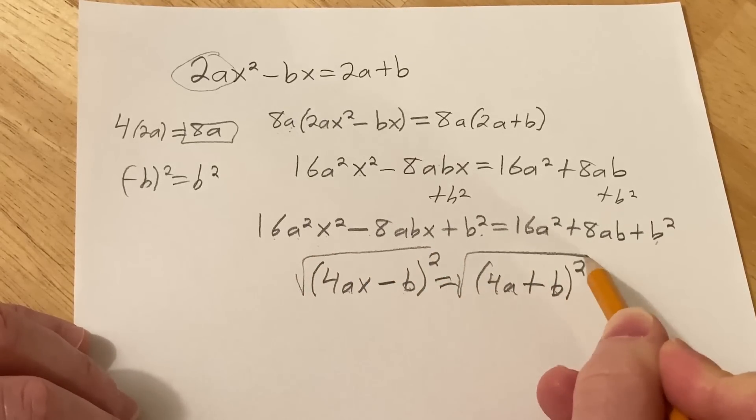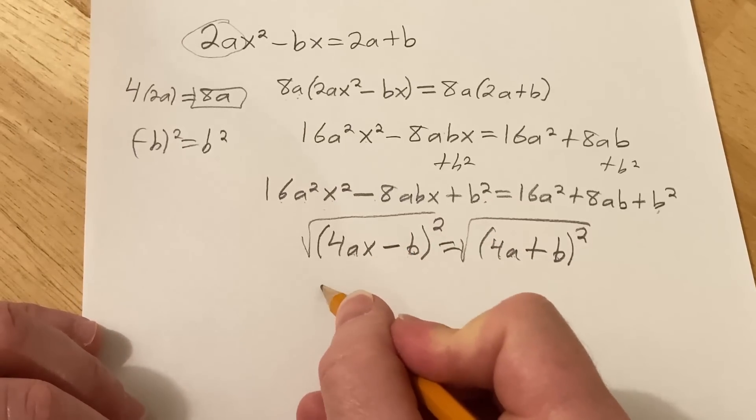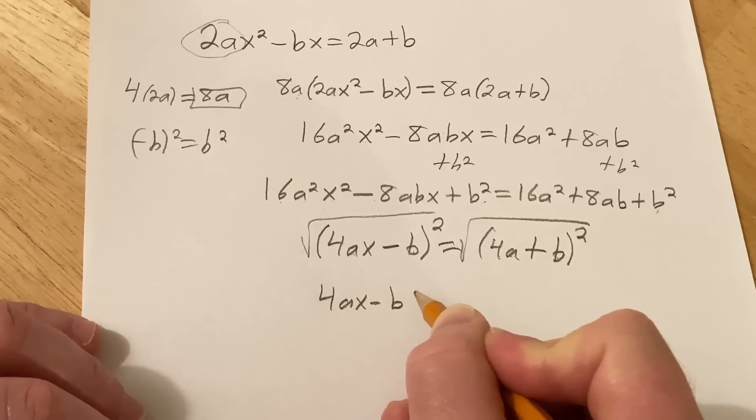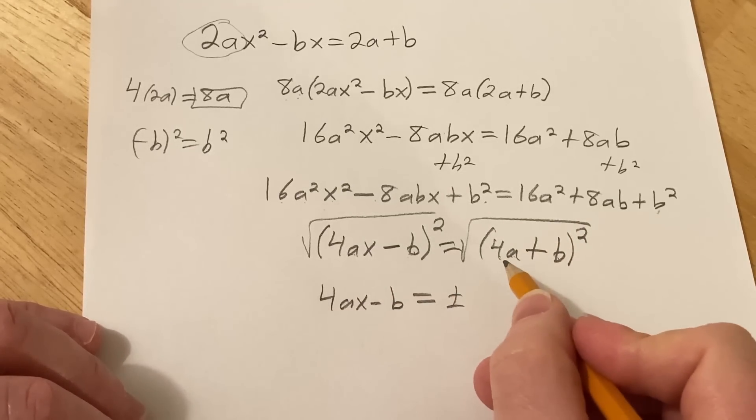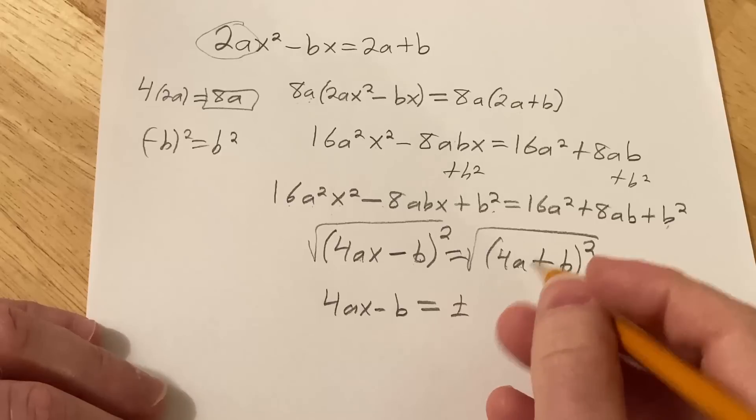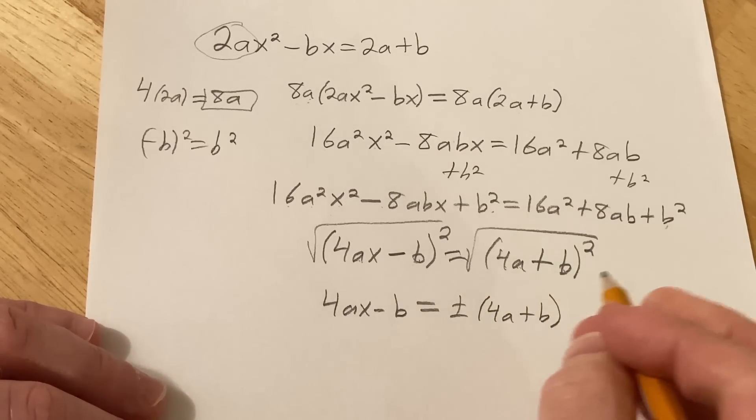Take the square root. I'm feeling much better about this problem now because it's working out. So this is 4ax minus b. But let's not get sloppy. Plus or minus. And then this is 4a plus b. So I'm going to go ahead and put it in parentheses because I'm pretty sure we need to do that.